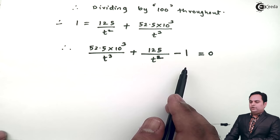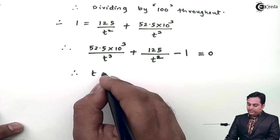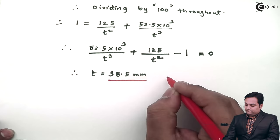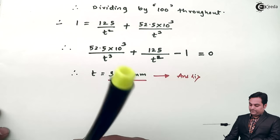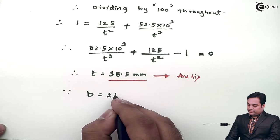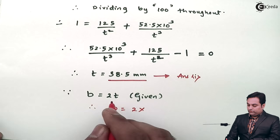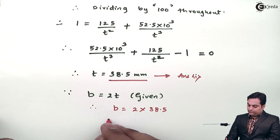Solving this cubic equation by trial and error (or using a calculator), we get t = 38.5 mm. This is the thickness of the rectangular cross-section.